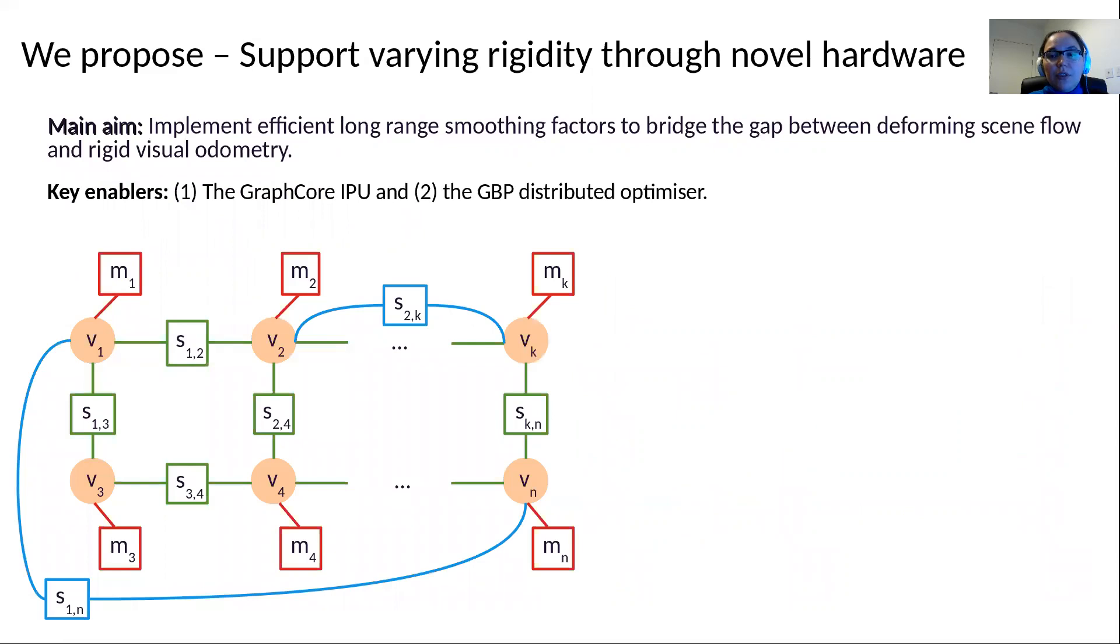We propose to support varying rigidity through novel processing hardware. Our main aim is to implement efficient long-range smoothing factors to bridge the gap between deforming scene flow and rigid visual odometry. Our key enablers are the GraphCore IPU and the GBP distributed optimizer. Essentially our aim is to enable long-range smoothing factors between variables which are far from each other on the image plane. For example, S1n would enforce that the top-left and bottom-right pixels in an image would have the same motion.